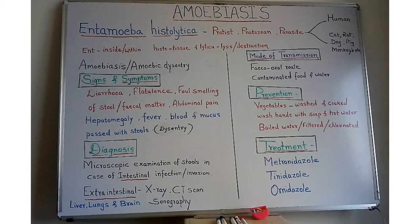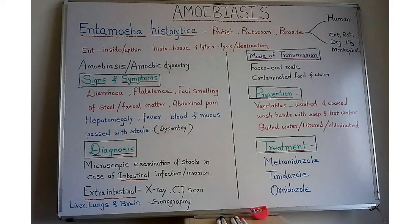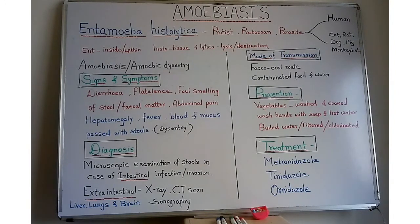The most important and common symptoms found in amoebiasis are: first, diarrhea, which is the characteristic symptom. Diarrhea can occur about 10 to 12 times — it means the passing of loose watery stools more frequently than usual. Flatulence is intestinal gas that is passed out. Foul smelling of stools can also be seen, and abdominal pain is associated with diarrhea.